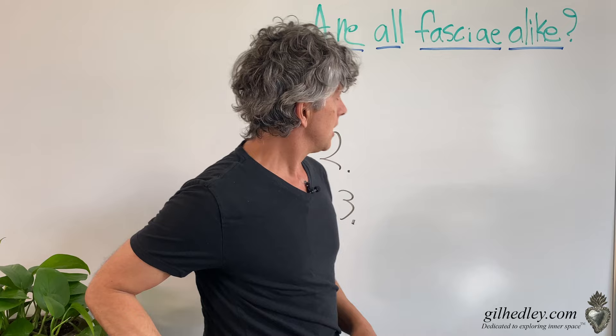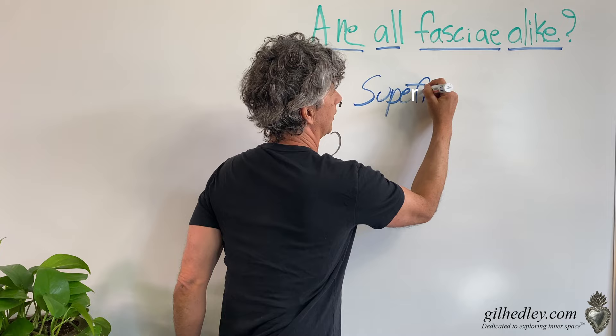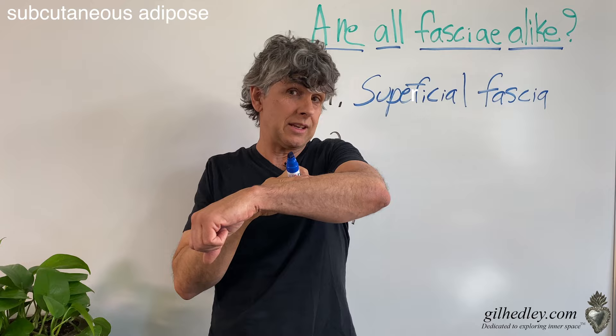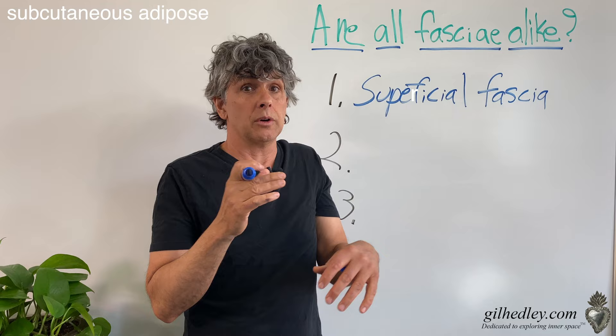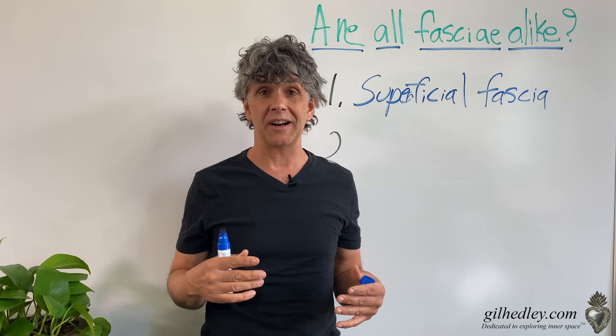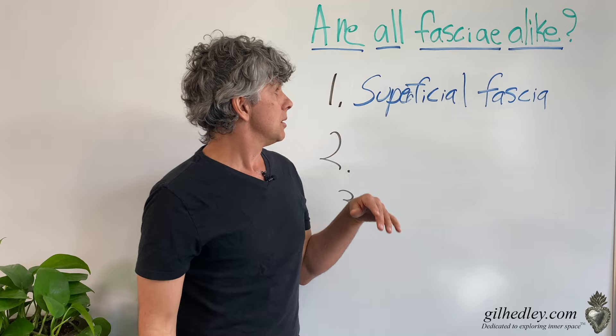First one: superficial fascia. I love superficial fascia — I think it's really cool. Superficial fascia is superficial because it's at the surface. There are many words for superficial fascia in our anatomy vocabulary. One of them is subcutaneous adipose, meaning the fatty layer underneath your skin. Another word for it: the panicula. Some folks in different countries may even use a different word altogether for the adipose layer, and that's fine. There's a lot of variety out there.